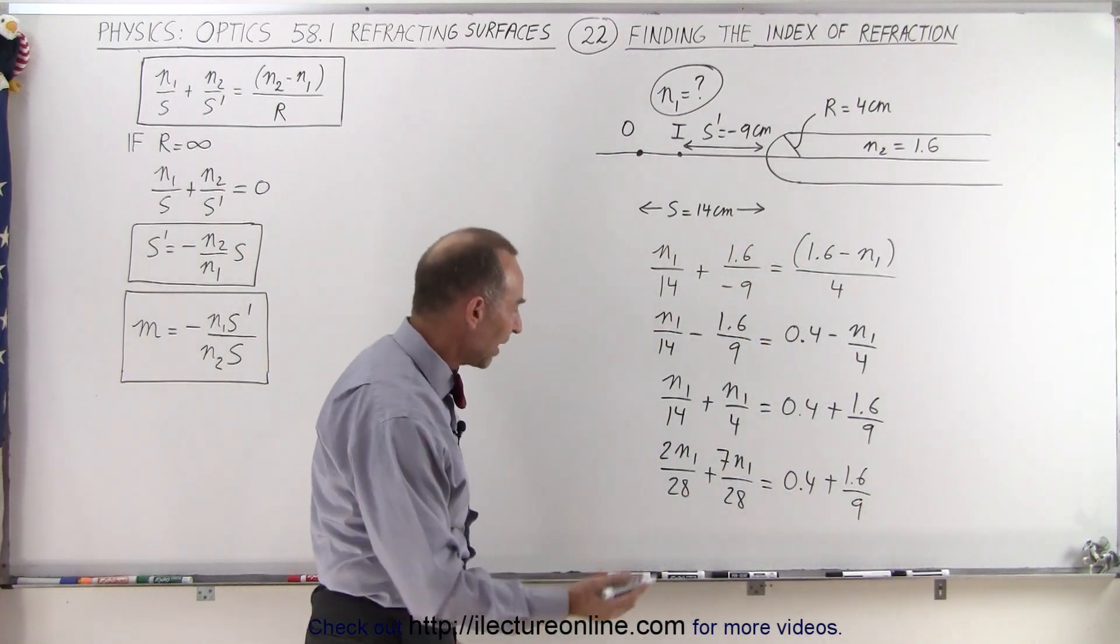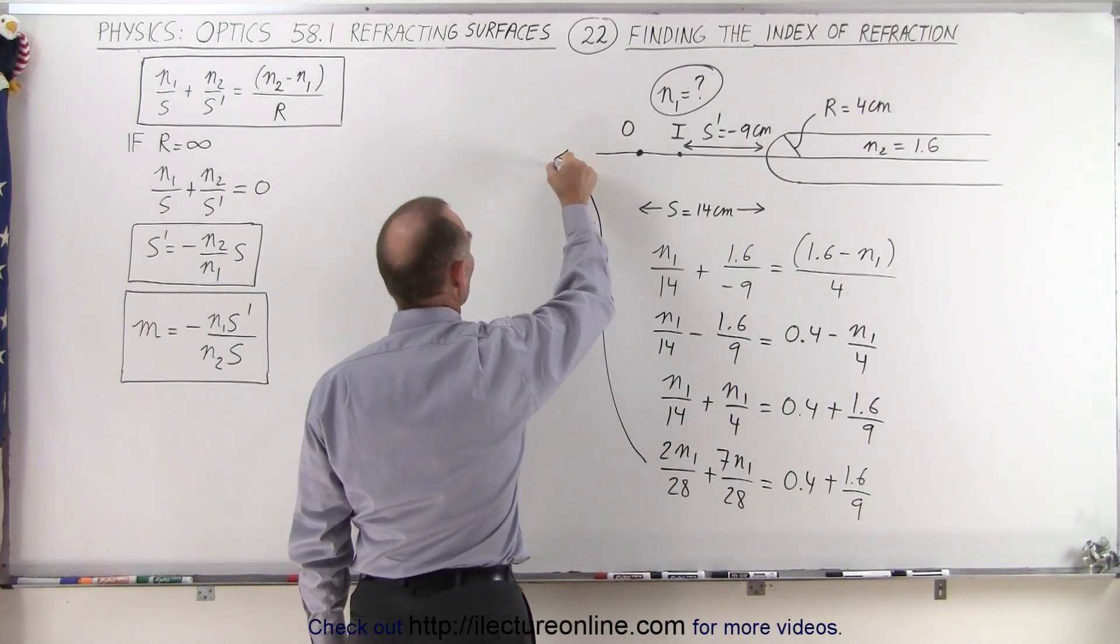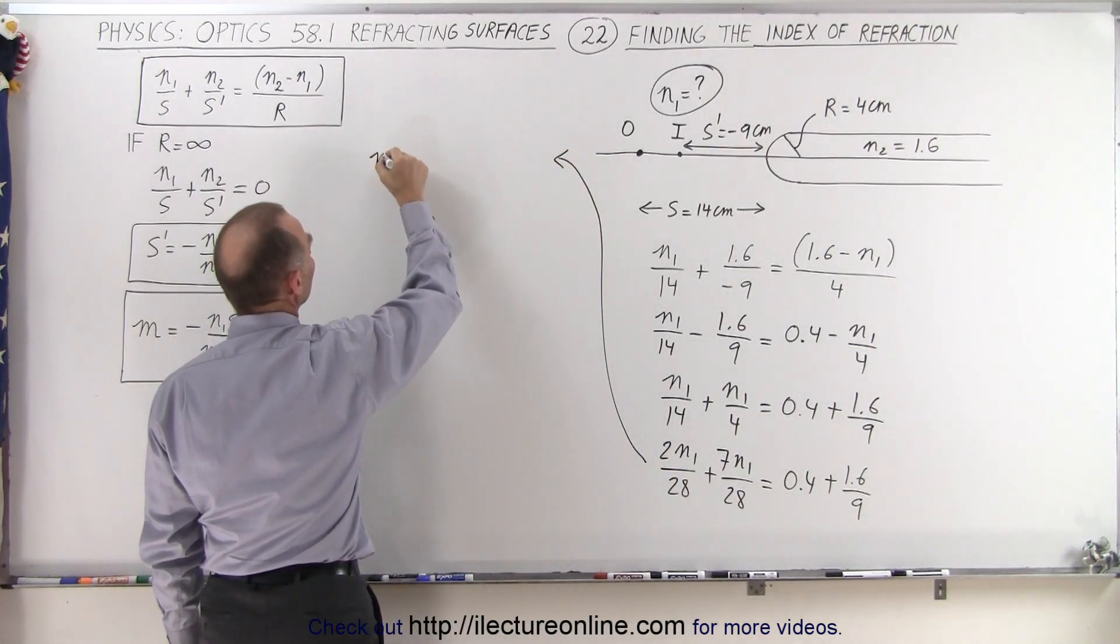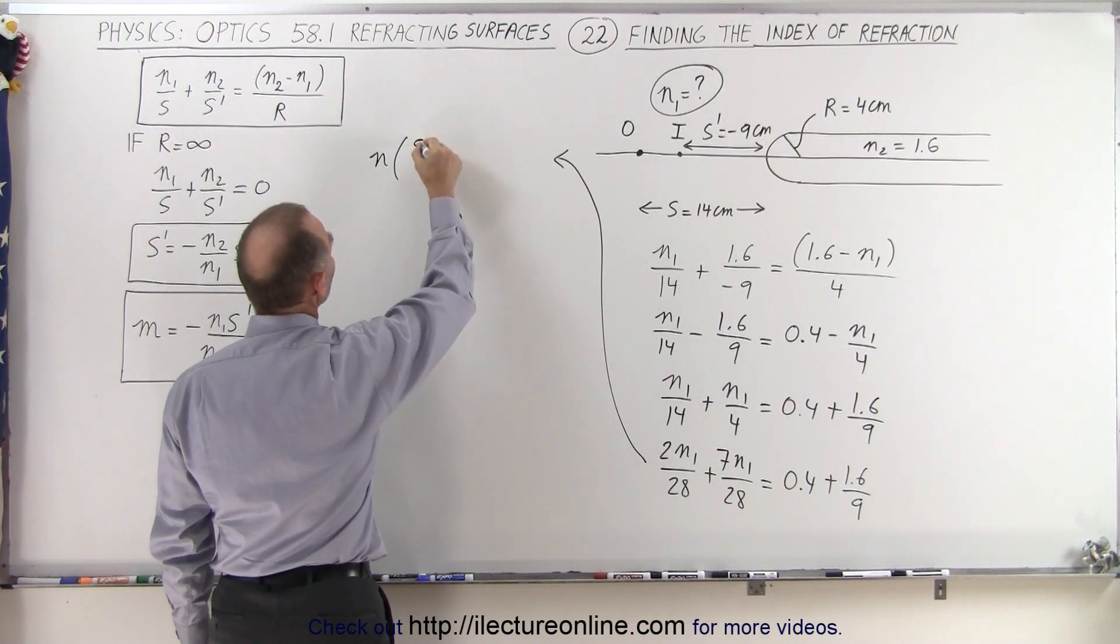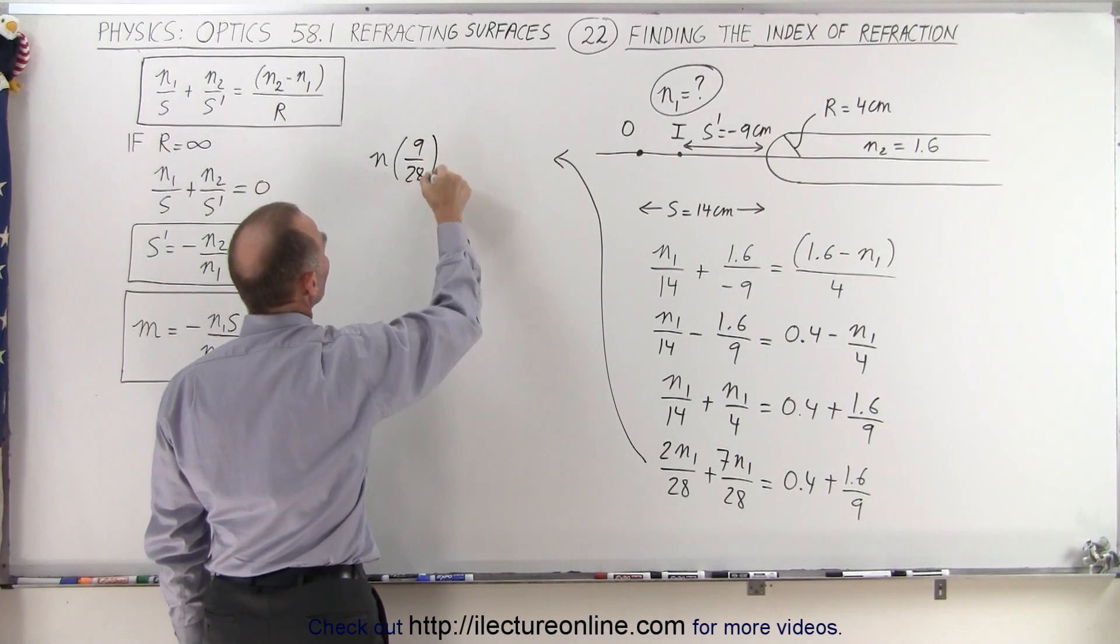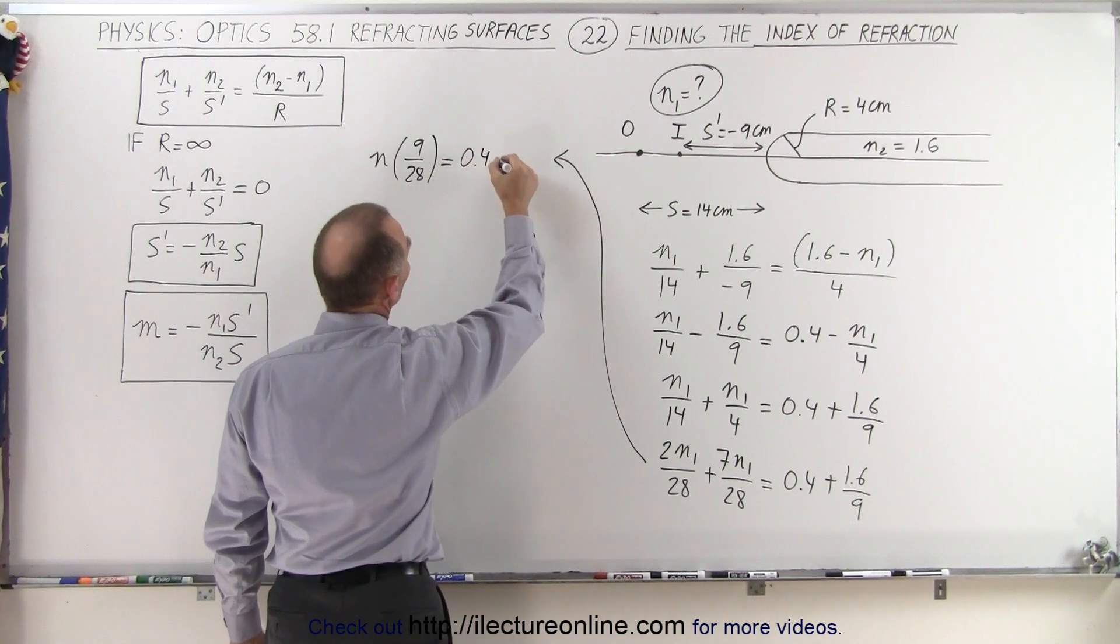And then if we factor out an n1 and combine the terms, what we have here is n1 times 2 plus 7, which is 9, so 9n1 over 28 equals 0.4 plus 1.6 divided by 9.